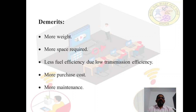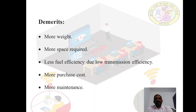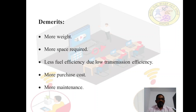Since all wheels are getting traction, the off-road ability is also improved. Coming to the demerits: because of the front and rear differentials and the additional linkages, the weight is going to be more. To accommodate all these components you require more space. There is less fuel efficiency due to lower transmission efficiency. The cost of the vehicle will be more, and since there are more linkages the maintenance is also going to be more.